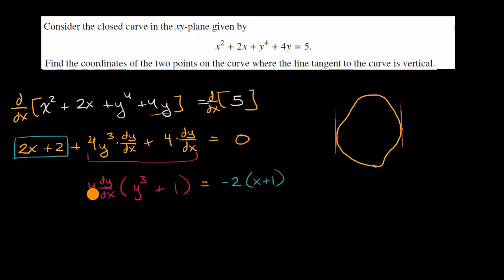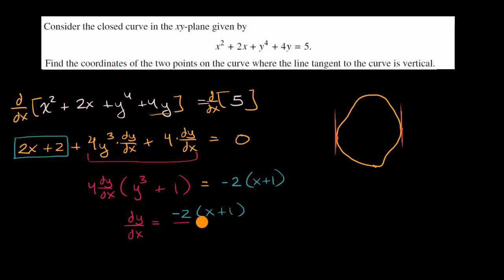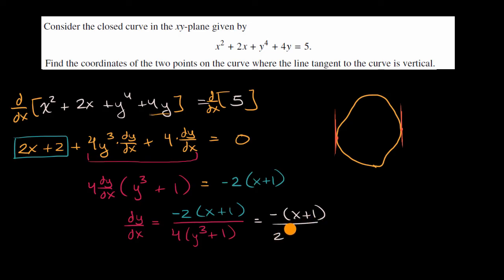Now I just divide both sides by four times all of that, and I get the derivative of y with respect to x is equal to negative two times x plus one divided by four times y to the third plus one. This can be rewritten as negative of x plus one divided by two times y to the third plus one — I just divided the numerator and denominator by two.